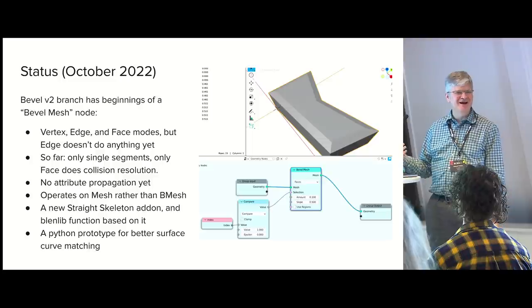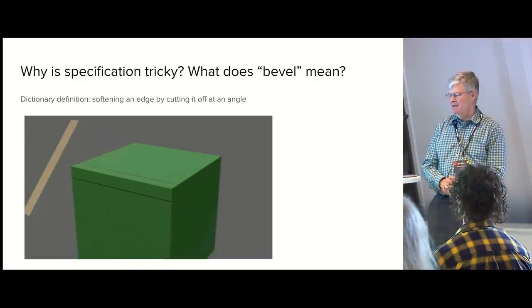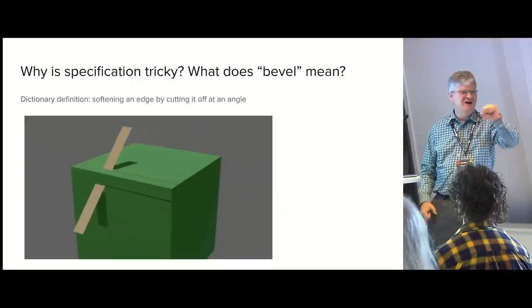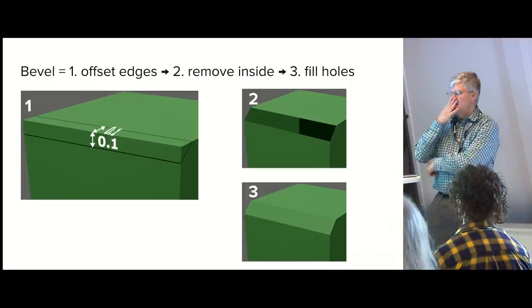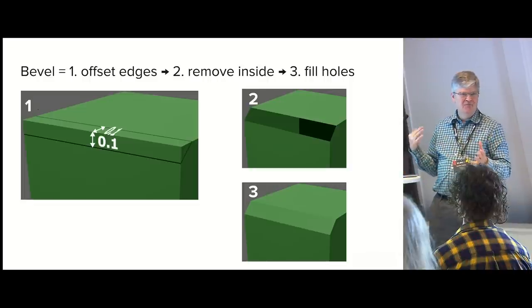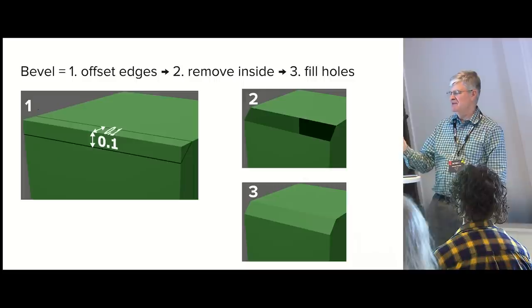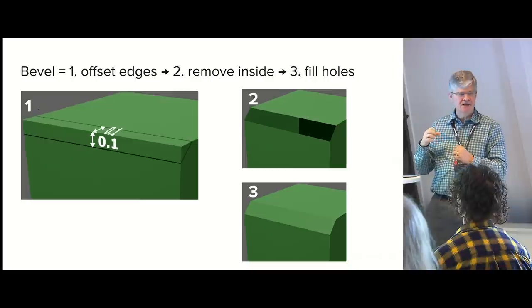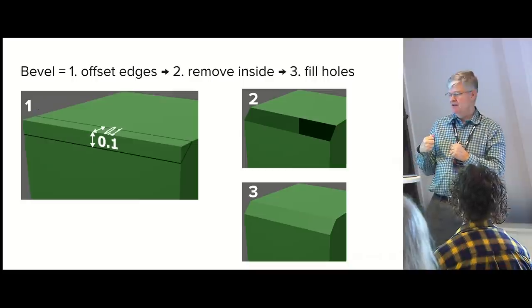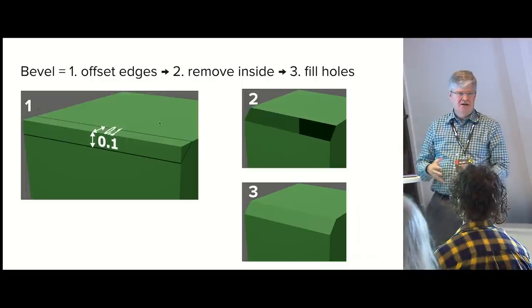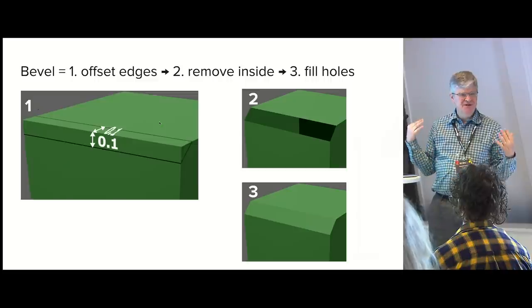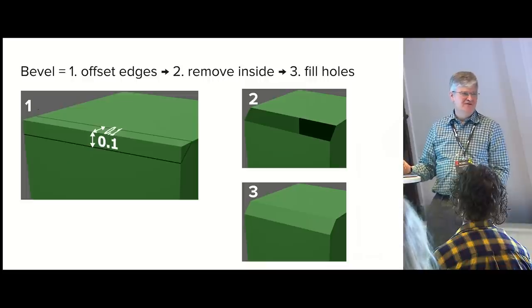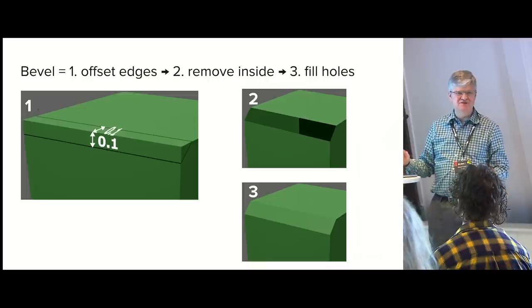This is mainly a technical talk about why bevel is hard. Conceptually, it's this simple woodworking thing — you take a tool and shave a little bit off an edge. If you convert that into polygon mesh mode, it means: you take an edge you want to bevel, put some offset edges a set distance away, remove all the material in the hole between those edges, and fill them up. But there are a whole bunch of issues. Some were immediately obvious; some I only learned through many bug reports. I'm going to spend a lot of time talking about these so you can see that there are a lot of choices you have to make when implementing bevel.